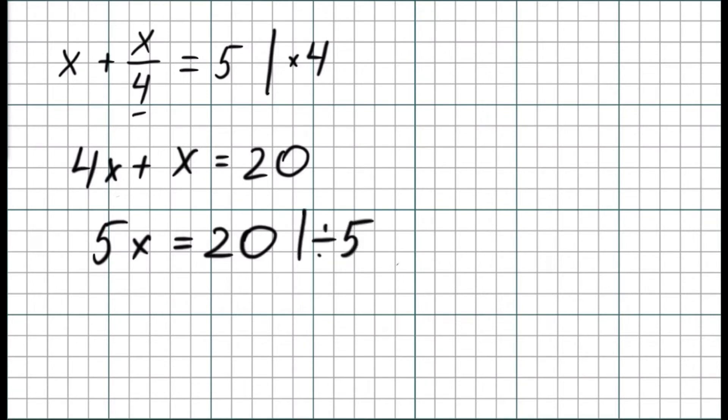5x divided by 5 is x. 20 divided by 5 is 4. x equals 4 is our answer.